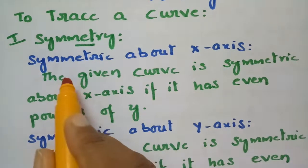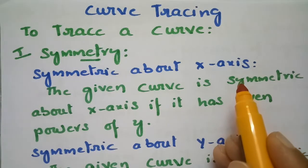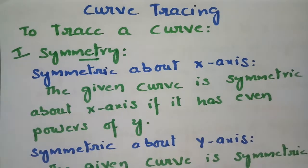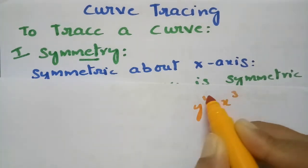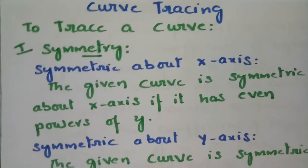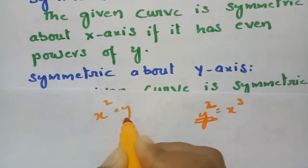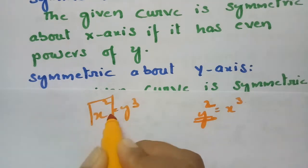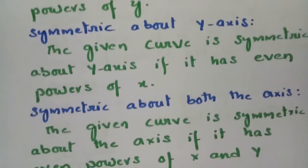The first one is symmetry about the x-axis. The given curve is symmetric about the x-axis if it has even powers of y. The next one is symmetry about the y-axis — the given curve is symmetric about the y-axis if it has even powers of x.